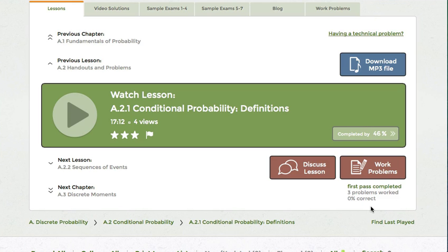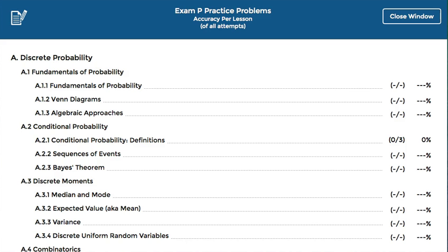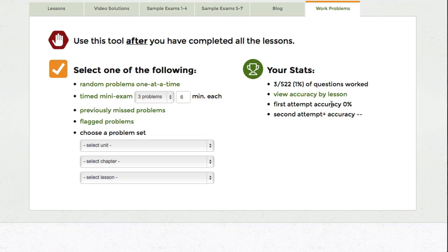Once you're finished watching all the lessons and working on the first pass problems, use the Work Problems tab to start practicing. This is where you can find your stats for the whole course, or even pop out a detailed list of your performance from each lesson. You can also tell at a glance how much you're improving between your first and subsequent attempts at problems in the whole course.